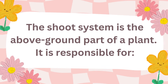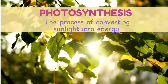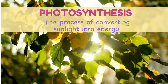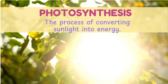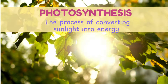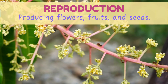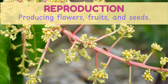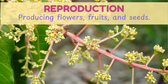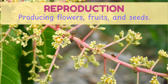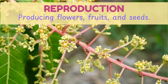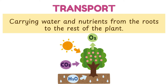The shoot system is the above ground part of a plant. It is responsible for photosynthesis, the process of converting sunlight into energy, reproduction — producing flowers, fruits, and seeds — and transport, carrying water and nutrients from the roots to the rest of the plant.